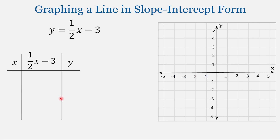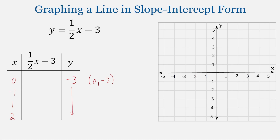You can always graph an equation by creating a table, selecting values for x, finding the corresponding y-coordinate which gives us an ordered pair. When we plot those ordered pairs and connect the dots, we get our line. This is a time-consuming process, but it does work.